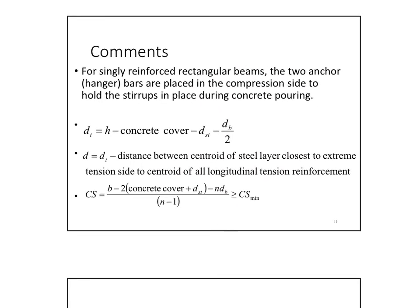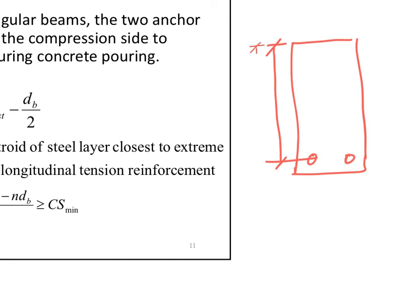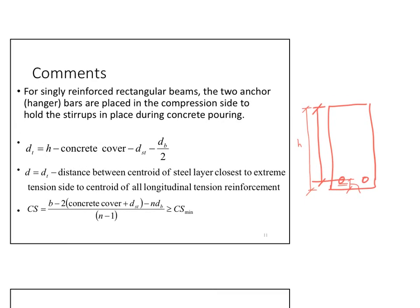How do we calculate dt? Simply: dt = h minus concrete cover, minus d-stirrup, minus half a bar diameter. When d equals dt, it means there is only a single layer of steel. If there is more than one layer, we subtract further to reach the centroid of all the layers to get d.